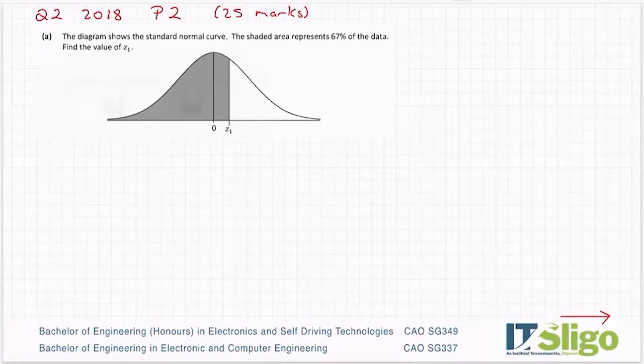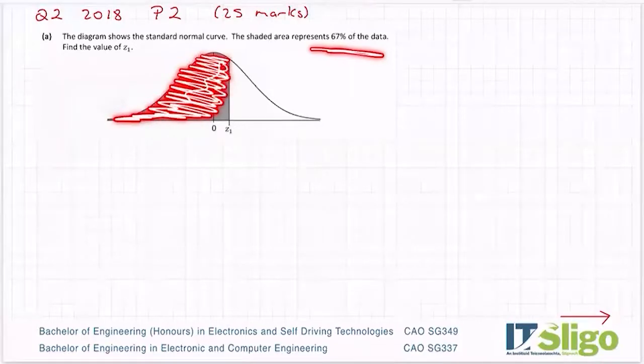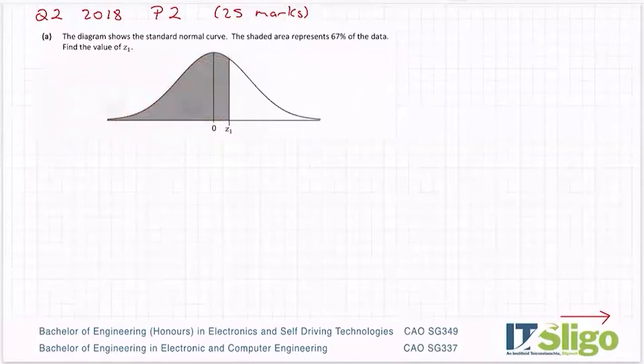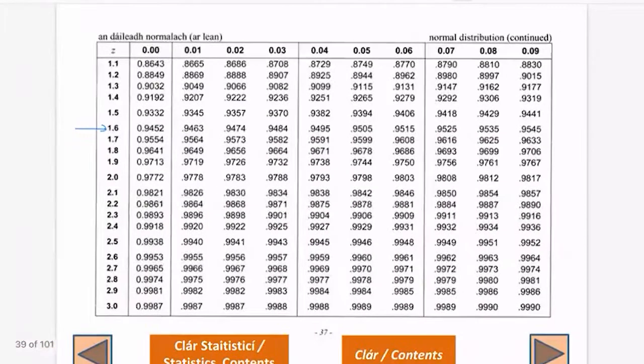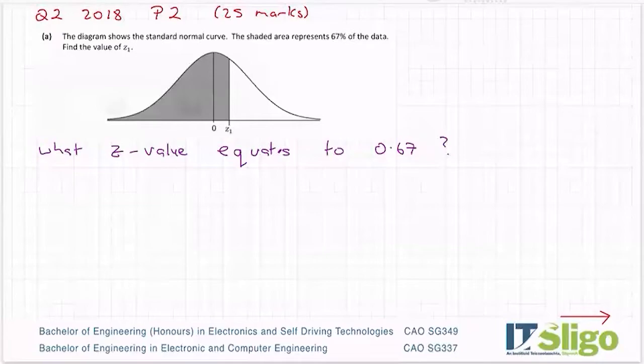So this is a bit of a backwards one. They've given you the proportion or the percentage that is covered up to that line. In other words, they want to know what Z value equates to 0.67.